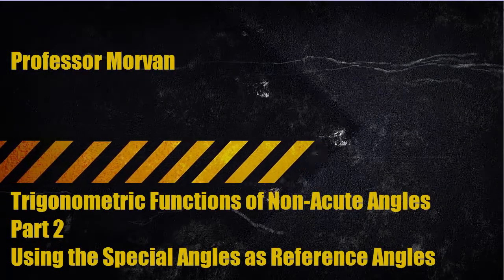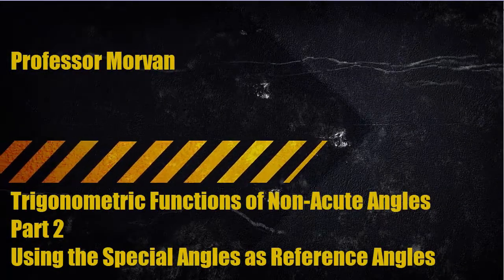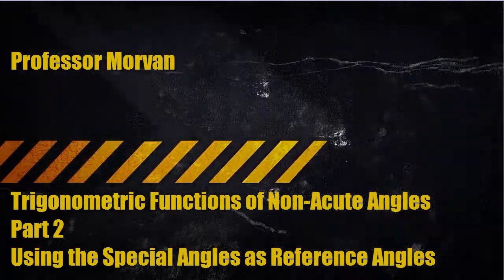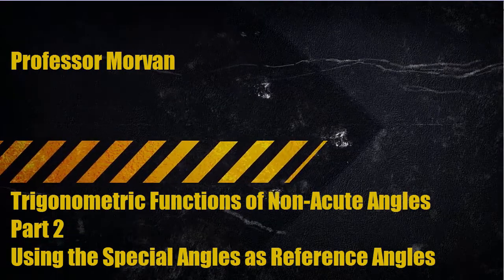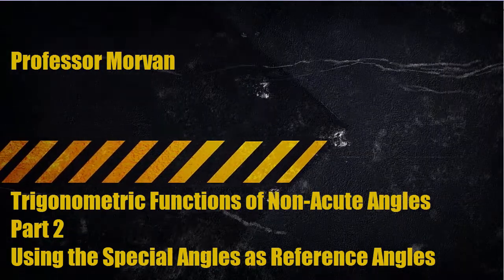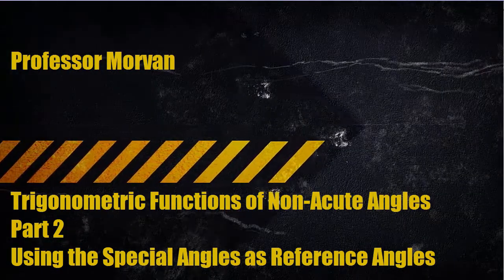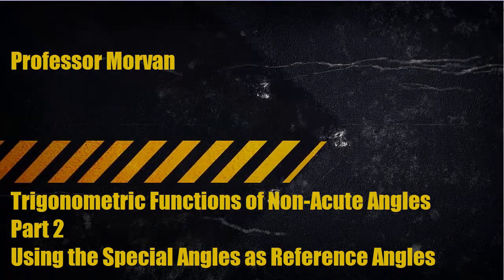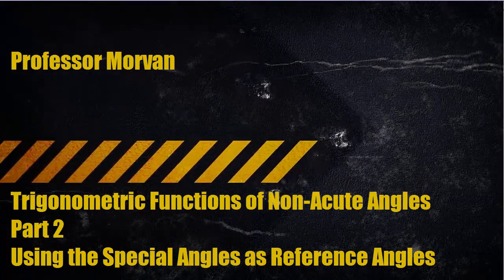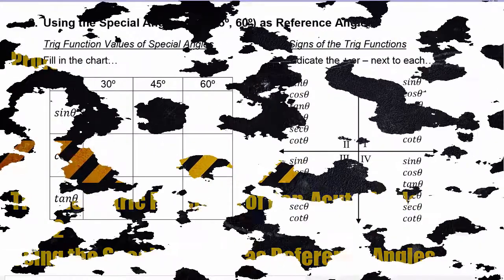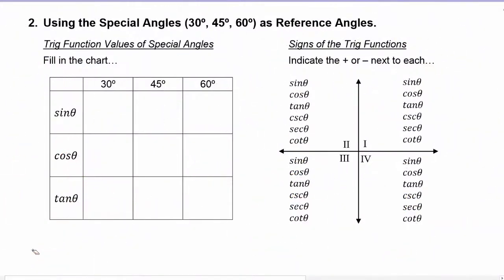In part two of our lesson on the trigonometric functions of non-acute angles, we're going to learn how to use the special angles as reference angles. In order to do this, we need a couple pieces of information here.